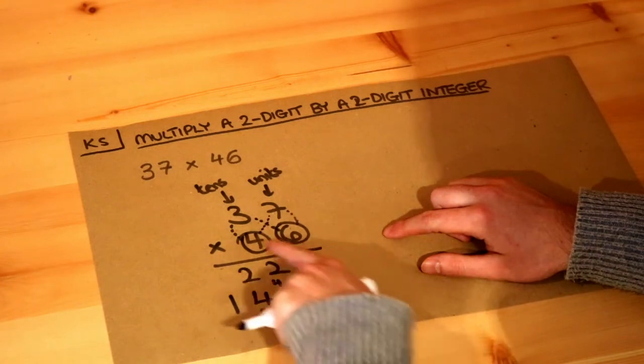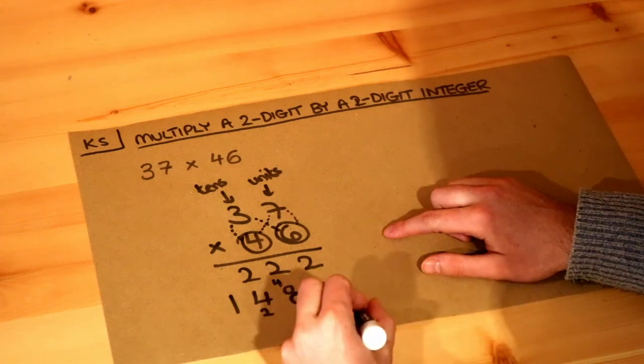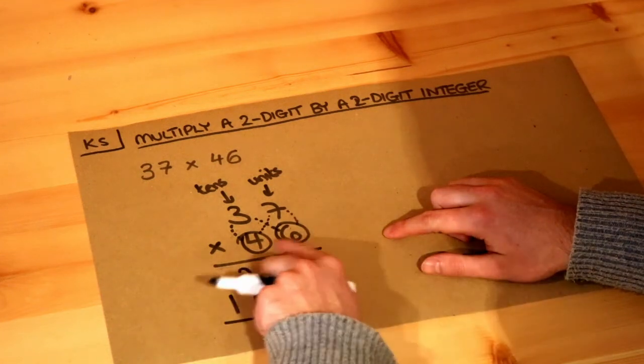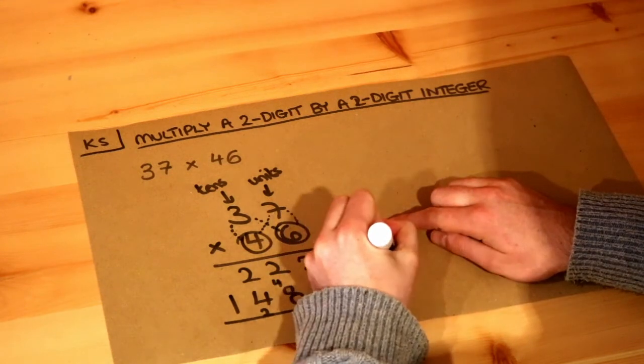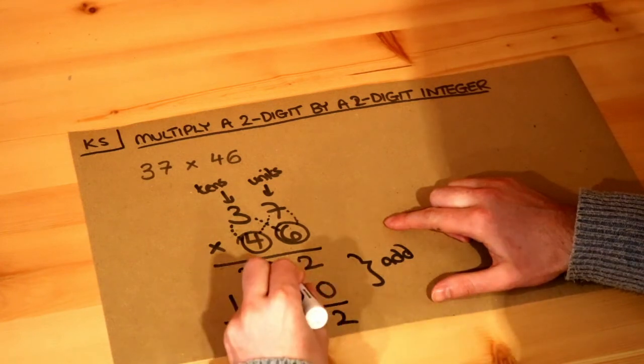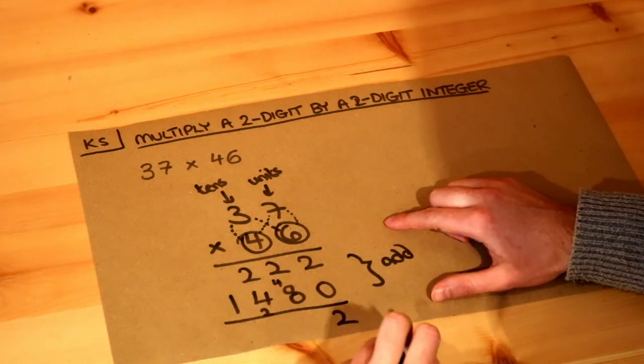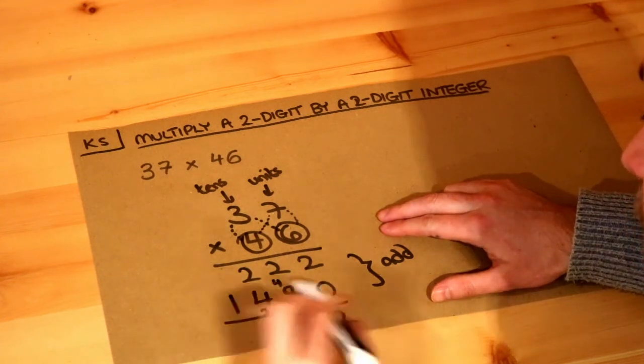To get 46 lots of 37, we add these numbers together. 2 plus 0 is 2. 2 plus 8 is 10—we put the 0 and carry the 1. 2 plus 4 is 6, plus the carried 1 is 7.